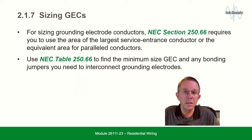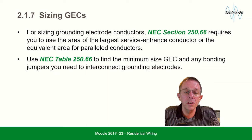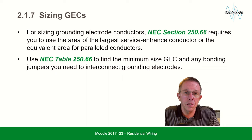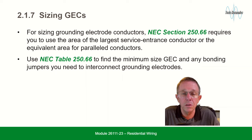Sizing GECs: for sizing grounding electrode conductors, NEC section 250.66 requires you to use the area of the largest service entrance conductor or the equivalent area for parallel conductors. Use NEC table 250.66 to find the minimum size GEC and any bonding jumpers needed to interconnect grounding electrodes.